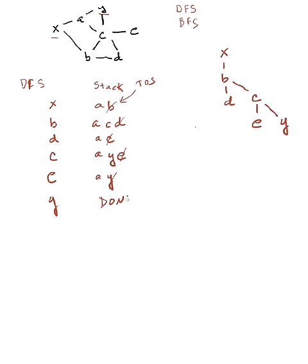So in my depth first, I'm done here, and I found the path from X to Y is X, B, C, Y, which we can see is not the shortest.